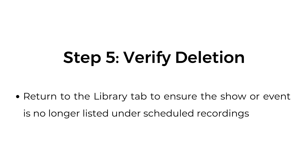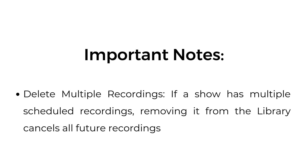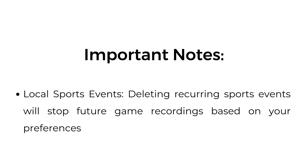Step 5: Verify deletion. Return to the library tab to ensure the show or event is no longer listed under scheduled recordings. Step 6 — Important notes. Automatic deletion: YouTube TV automatically deletes expired recordings after 9 months. Delete multiple recordings: If a show has multiple scheduled recordings, removing it from the library cancels all future recordings. Local sports events: Deleting recurring sports events will stop future game recordings based on your preferences.